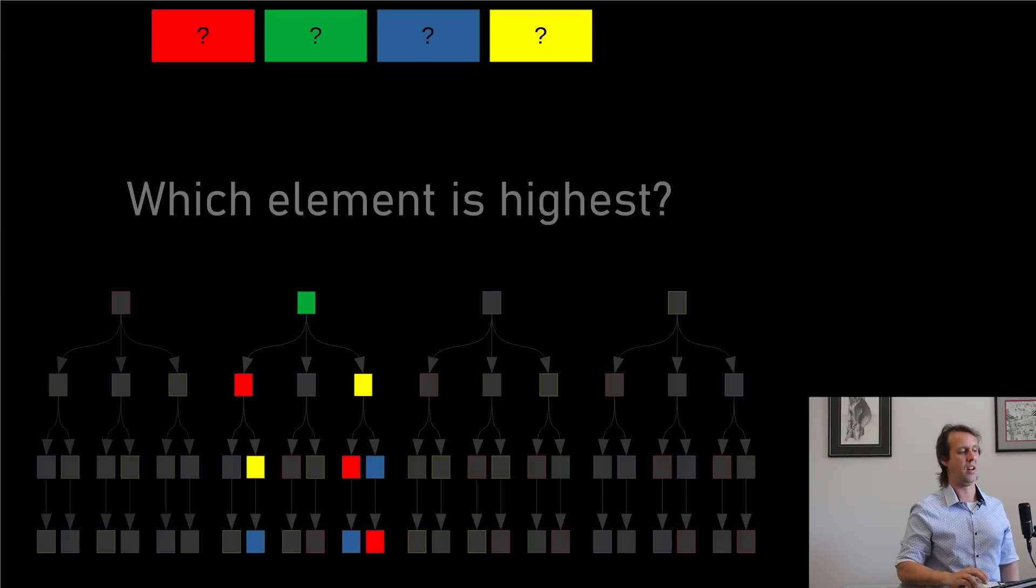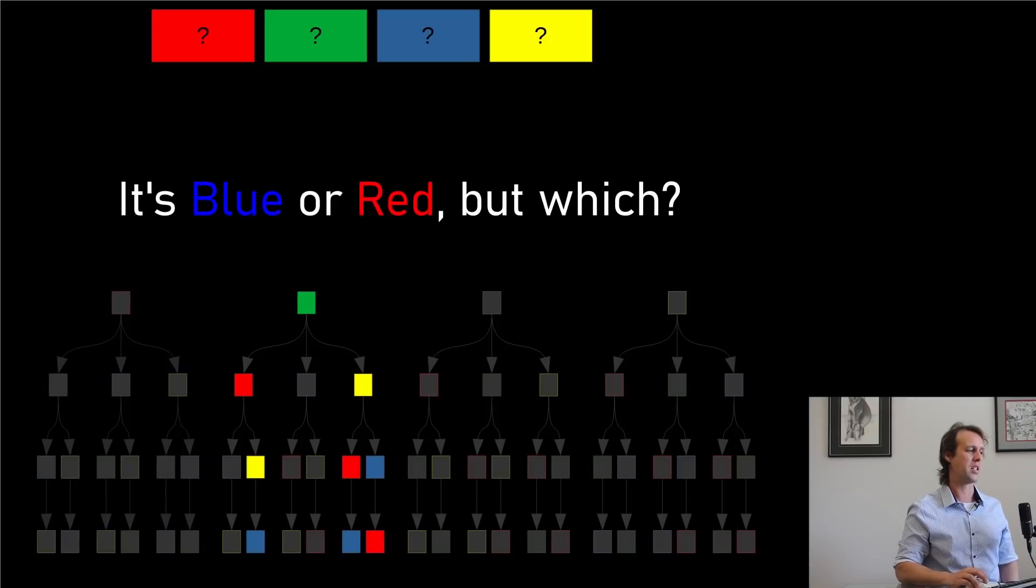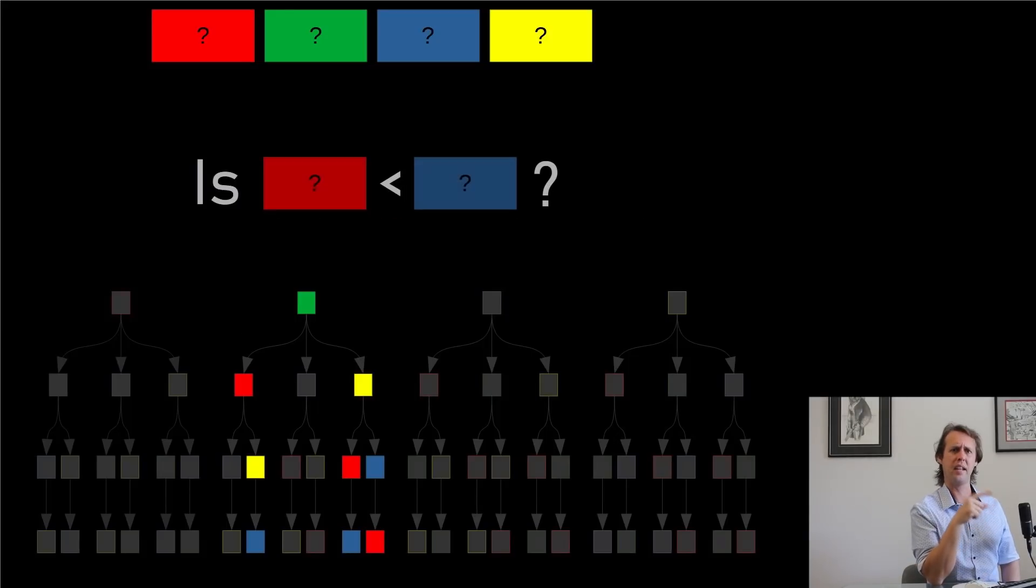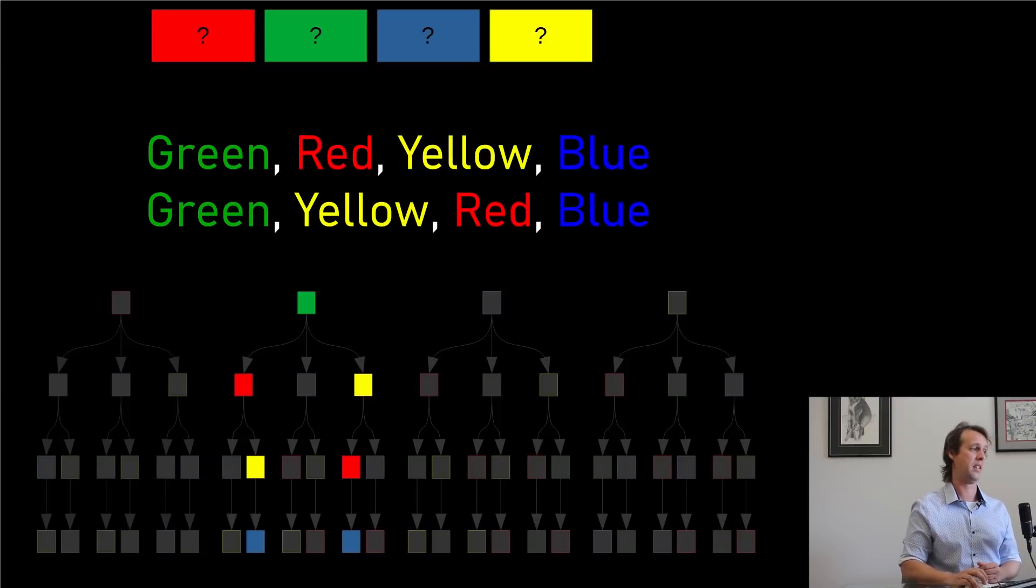It would be nice to know which is the highest element in our list. So we know that it's either blue or red. Since if we look at this bottom row just here, we see that they're the only options left. Let's ask the question is red less than blue? And the answer is yes. Red is indeed less than blue. This means blue actually has to be the largest element. There's only two permutations left. The sorted permutation either goes green, red, yellow, blue, or green, yellow, red, blue. All right. So we've got to ask one more question.